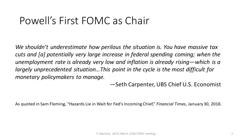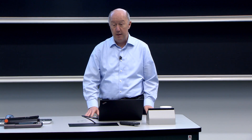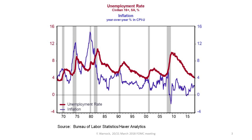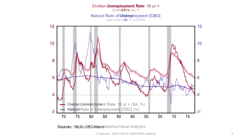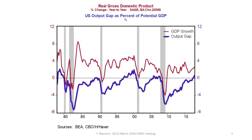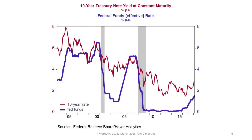A former Fed staffer, Seth Carpenter, said we shouldn't underestimate how perilous the current situation is. Inflation has been ticking up — it's still around 2%, a little bit below. Unemployment has plummeted. In a situation like that, you might expect there's no slack in the economy: the unemployment rate is now below the natural rate, inflation should really start to pick up. There's no slack in the labor market, no slack relative to potential GDP. Historically, that's led to inflation.